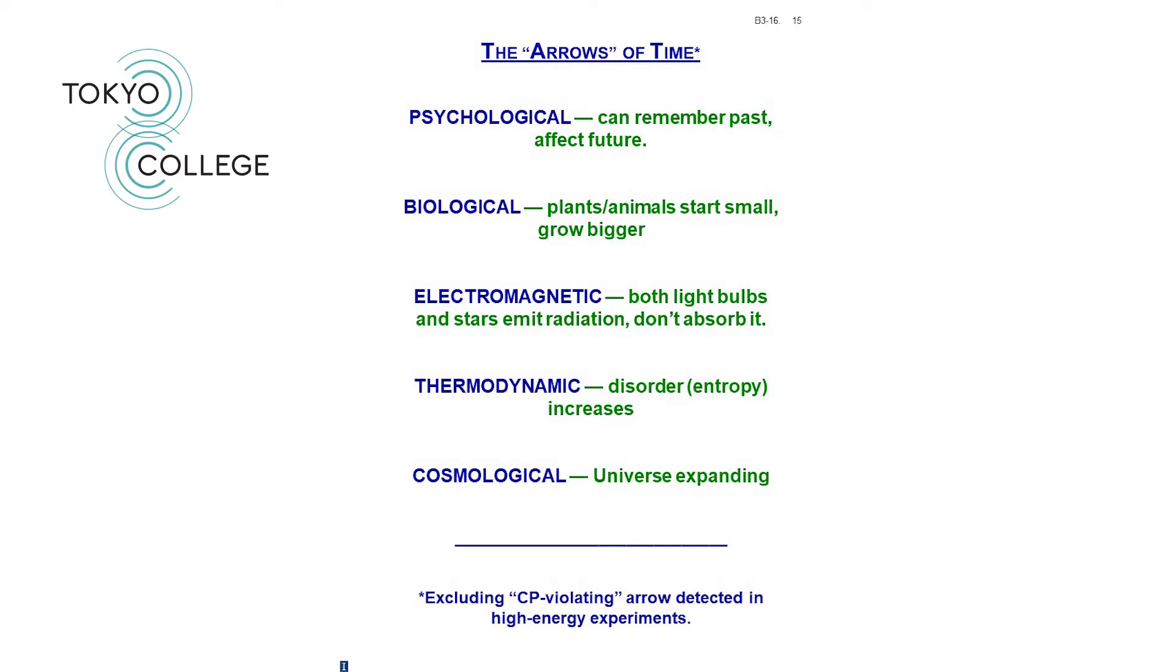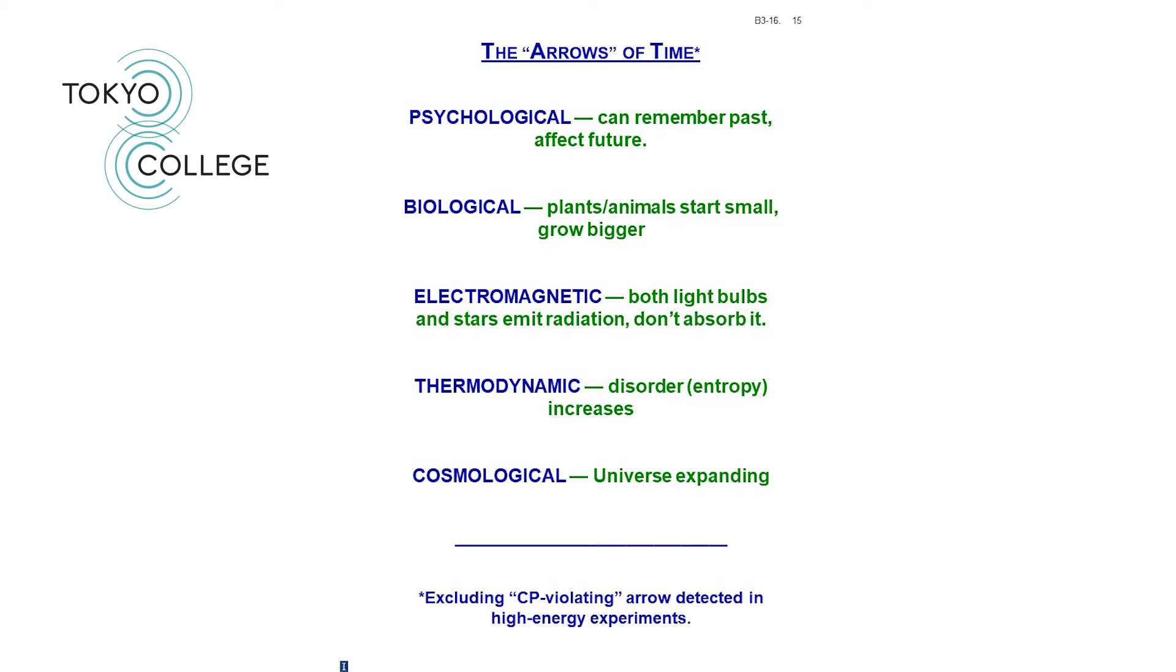Again, there's a rather simple relation between the biological and electromagnetic arrow. After all, how do plants grow? They grow by receiving radiation from the sun and turning it into energy. If the sun were to be sucking in radiation rather than sending it out, then that would not work. So again, I think this is rather plausible. Again, I think it's fairly plausible to imagine that the electromagnetic arrow is a rather special case of the thermodynamic one. Because after all, the state in which a star has radiated a lot of its energy turns out to have much more disorder, much more entropy, than the state in which all the radiation is contained in the star. Again, not so mysterious.